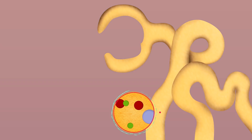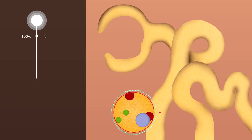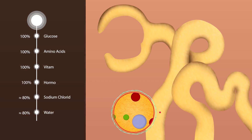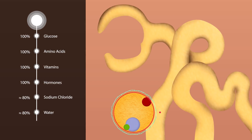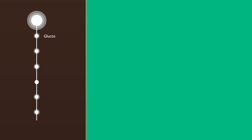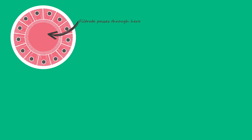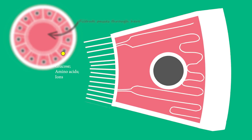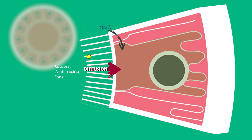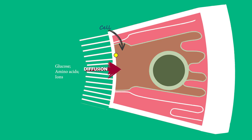Over 80 percent of the glomerular filtrate is reabsorbed here, including all the glucose, amino acids, vitamins, hormones, and about 80 percent of the sodium chloride and water. Glucose, amino acids, and ions diffuse into the cells of the proximal convoluted tubule from the filtrate.